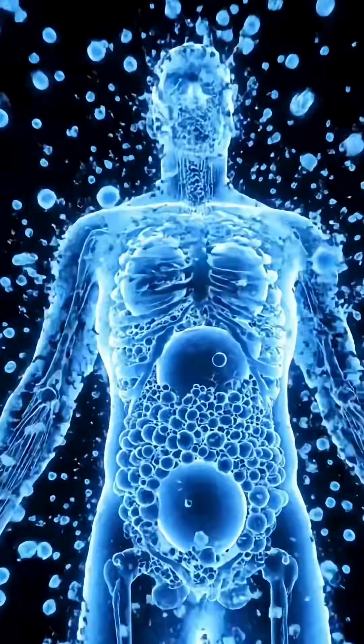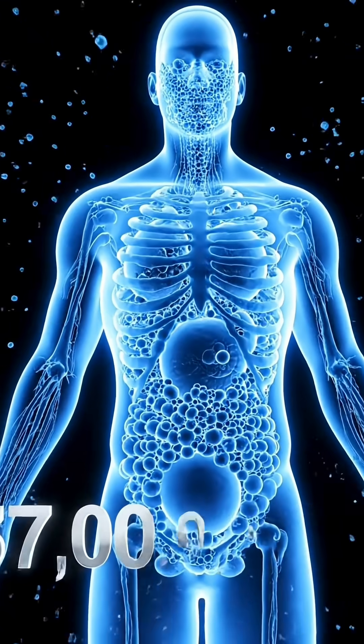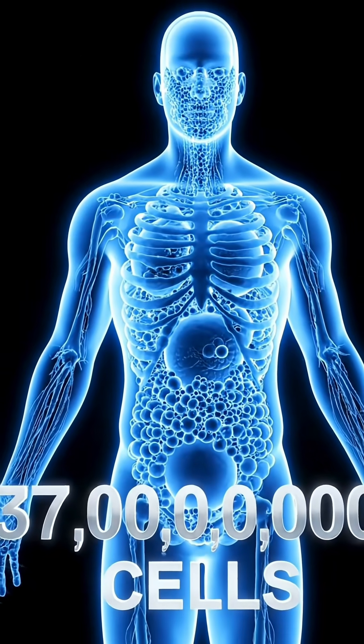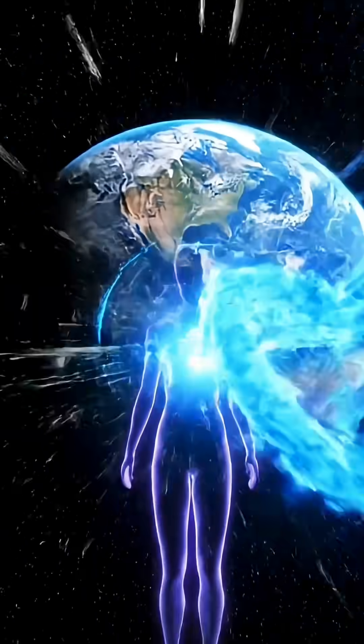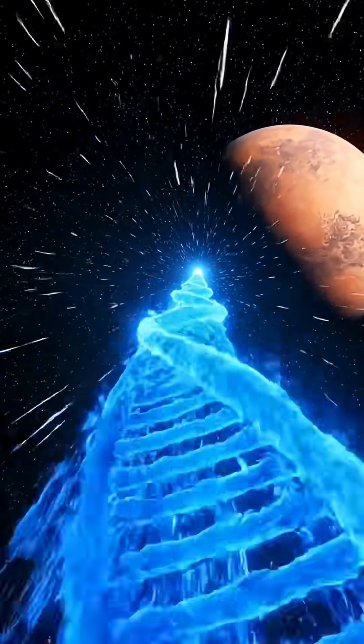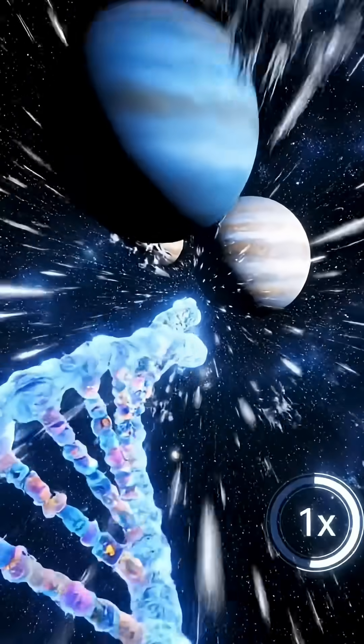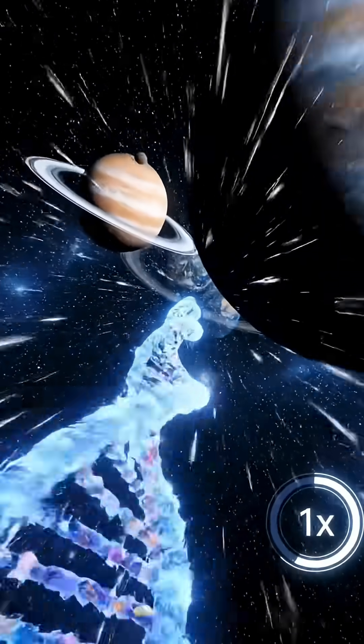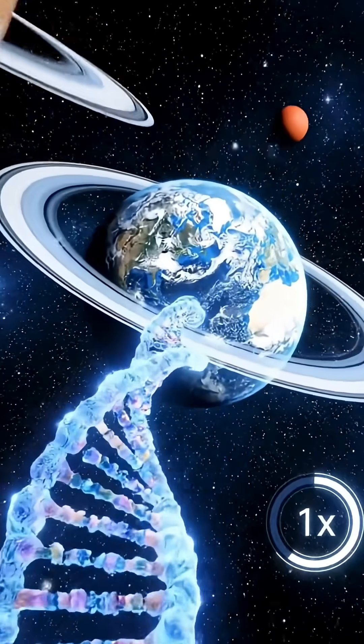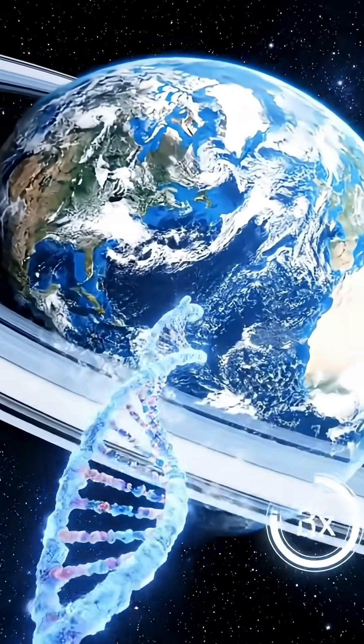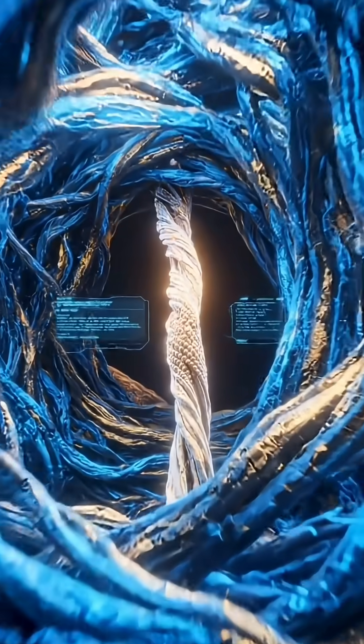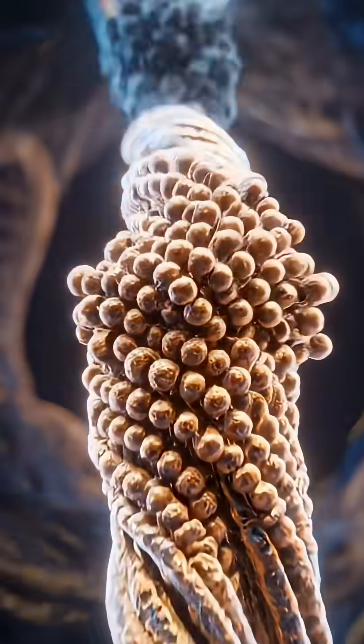Now, here's the crazy part. Your body has about 37 trillion cells. So if you line up all that DNA, it would stretch over 100 billion miles. That's 160 billion kilometers. And somehow, all that massive DNA fits perfectly inside each tiny little cell.